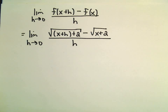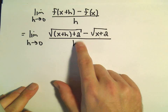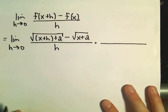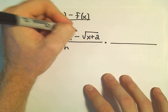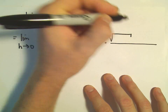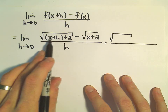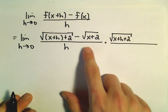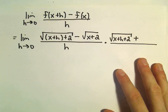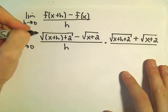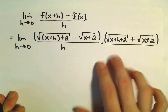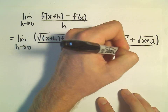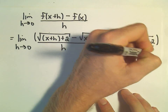If you plug in h equals 0, you get 0 in both the numerator and denominator — a 0/0 indeterminate form. We can evaluate this type of limit by multiplying by a conjugate. We change the sign in the middle, so we multiply by the square root of x plus h plus 2 plus the square root of x plus 2, over the same expression in the denominator.